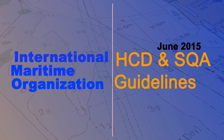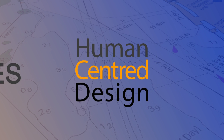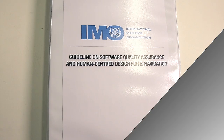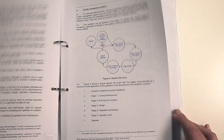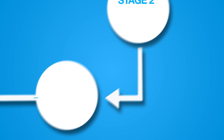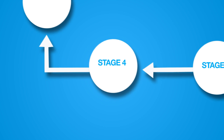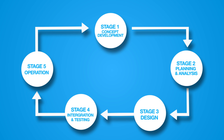In June 2015, the International Maritime Organisation approved the Software Quality Assurance and Human Centred Design Guideline for e-navigation. Using a lifecycle development process with five stages, the guideline lays out best practice methods to deliver new systems for e-navigation with a focus on quality and user experience. This five-stage approach can be applied to SQA and HCD and consists of concept development, planning and analysis, design, integration and testing, and normal operations.